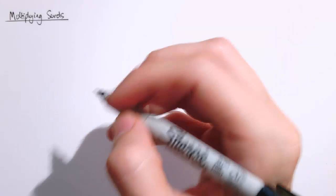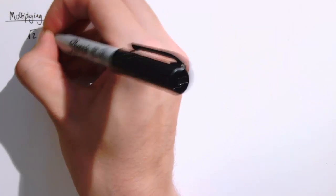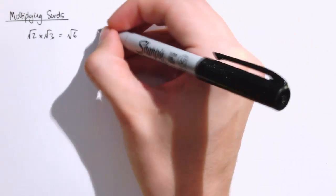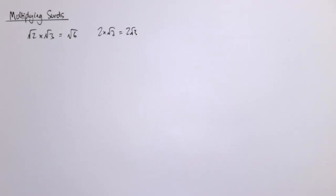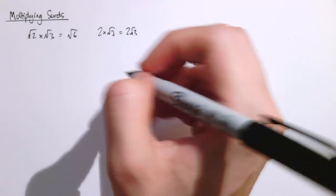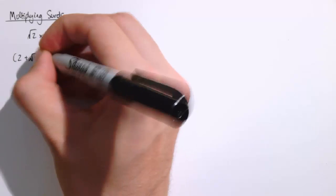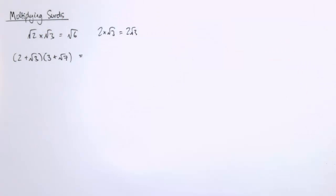In another video we talked about the simplest type of surd multiplications, like doing things like the square root of 2 times the square root of 3 giving us the square root of 6, or 2 times the square root of 3 just being written as 2 root 3. What I really want to look at here is slightly more complex multiplications, things like 2 plus the square root of 3 times 3 plus the square root of 7. If you're good at multiplying out algebraic brackets, you'll find these fairly easy.